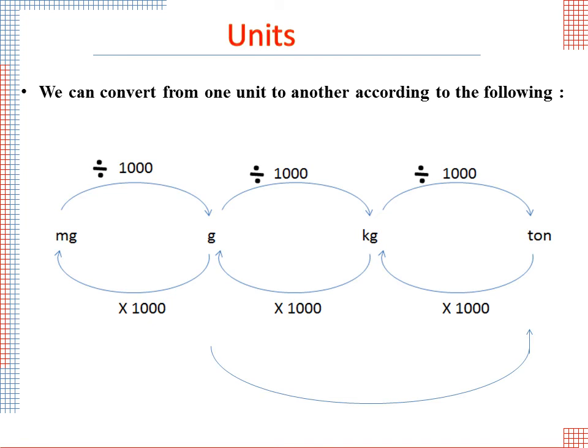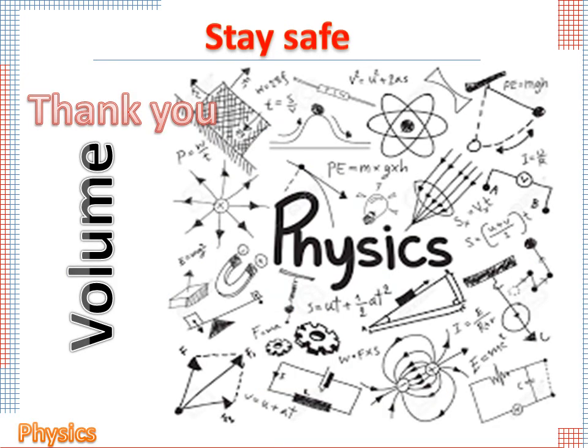Keep in mind, to convert from gram to ton, we have to divide by 1 million. And to convert from ton to gram, we have to multiply by 1 million. Thank you.